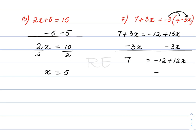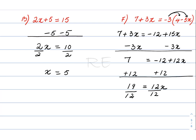We add 12 to both sides, so 19 is equal to 12x. To isolate x, we divide by 12. Therefore, x is equal to 19 over 12.